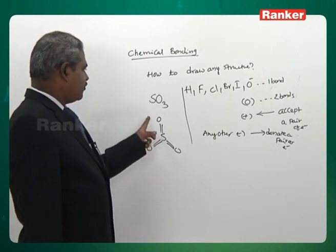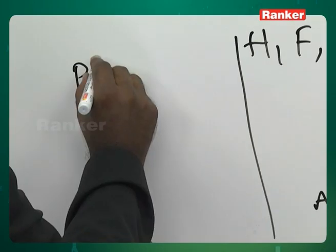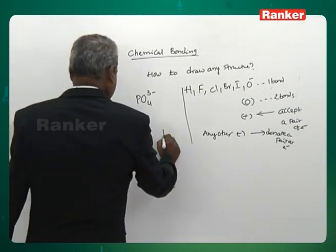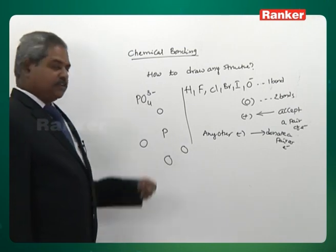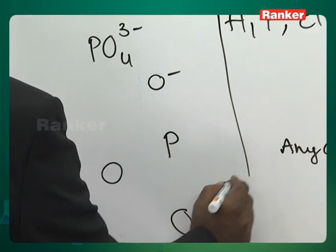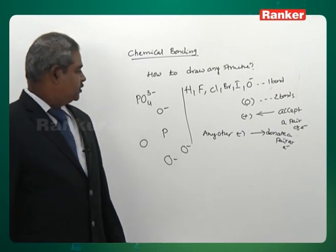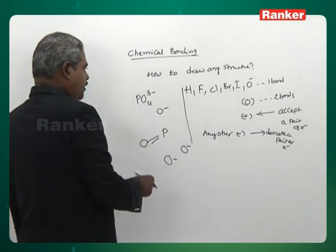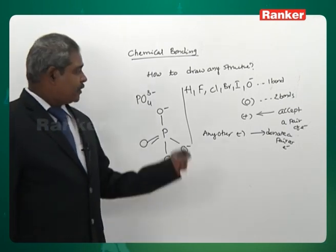PO4³⁻: phosphorus is the central atom with four oxygens. Three of them are O⁻ ions. Oxygen forms two bonds; O⁻ forms one bond. So one oxygen forms two bonds, three O⁻ ions form one bond each. That is the structure of PO4³⁻ — anyone can draw it by applying this simple procedure.